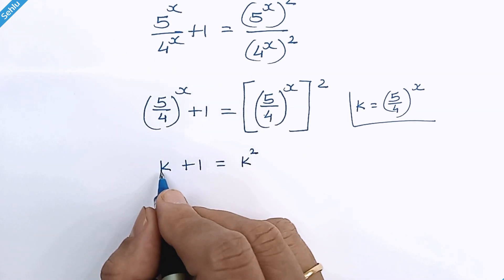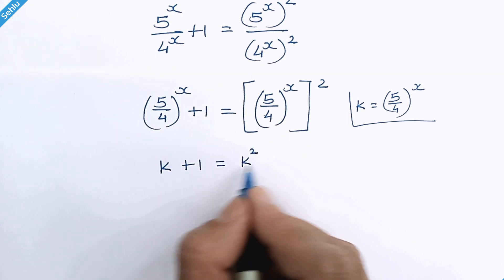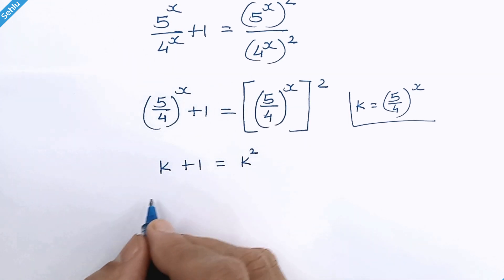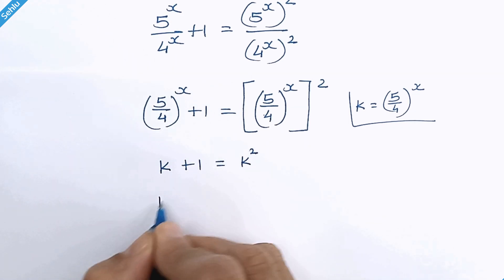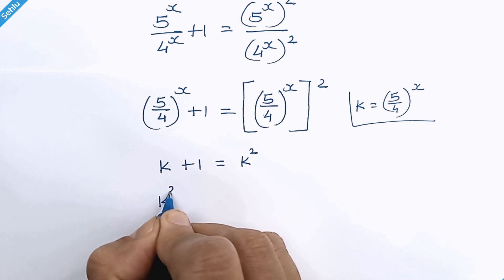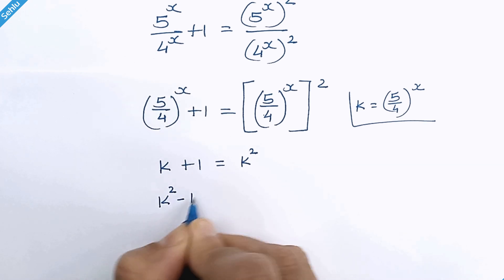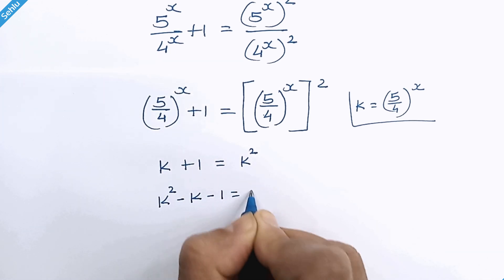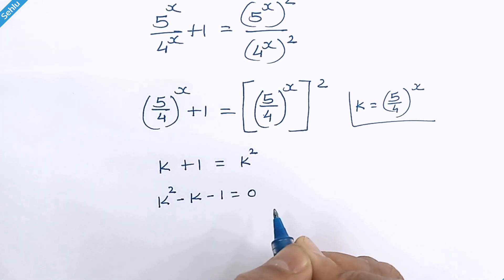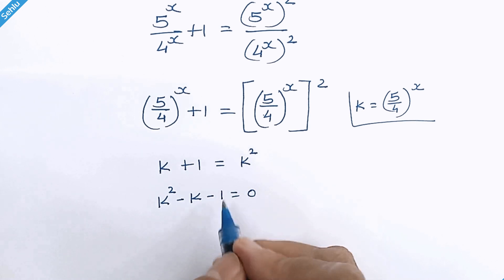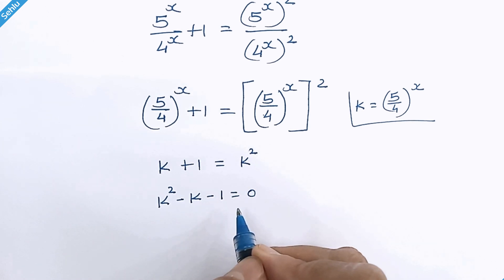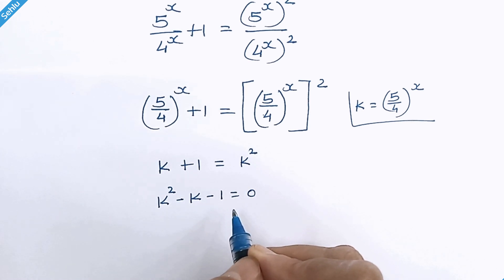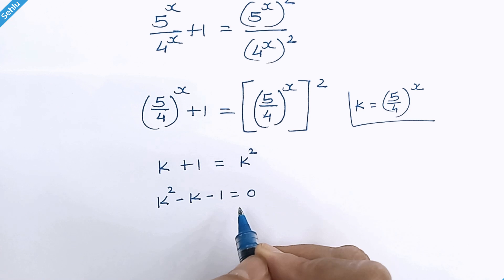If we move k and 1 to the right-hand side, it becomes k squared minus k minus 1 is equal to 0. This is a quadratic equation. Let's use the standard quadratic formula to find k.